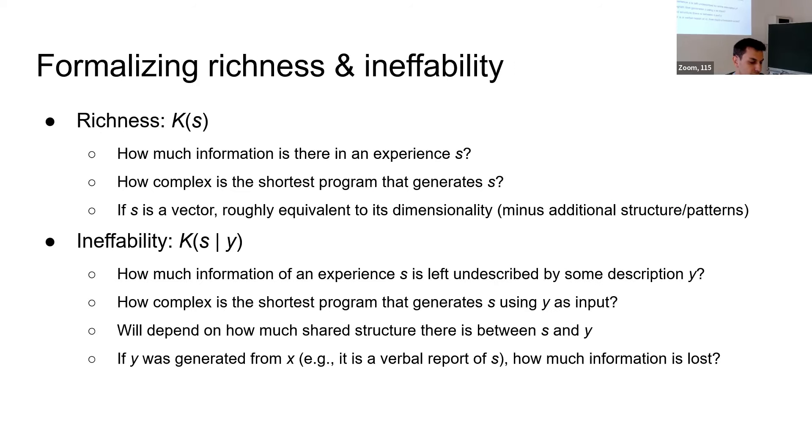A very natural kind of way to think about conditional Kolmogorov complexity is that it's ineffability. It's the remaining information in x that's unaccounted for by some description of it y. So that's just a summary of what I've already said. I'm going to be talking about richness as the Kolmogorov complexity of some objects. Let's say that we're talking about experiences, and I don't know what mathematical structure one uses to represent experience. I don't think anyone knows. But say it's some mathematical structure, say it is some information. Well, we could just talk about what's the length of the shortest program that outputs the information corresponding to that experience. If you think that the experience is basically something like a vector, then it's roughly equivalent to the dimensionality of that vector, minus some additional structure patterns that could exist in it.